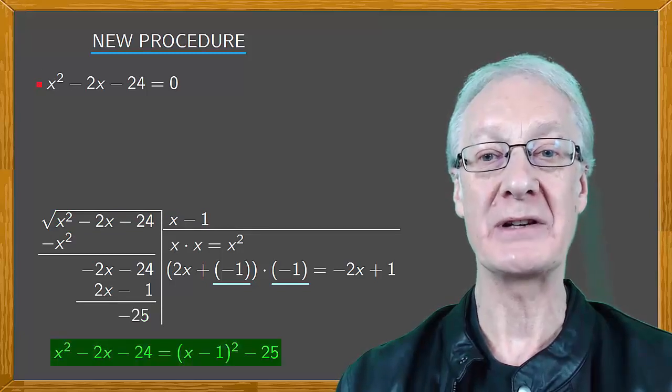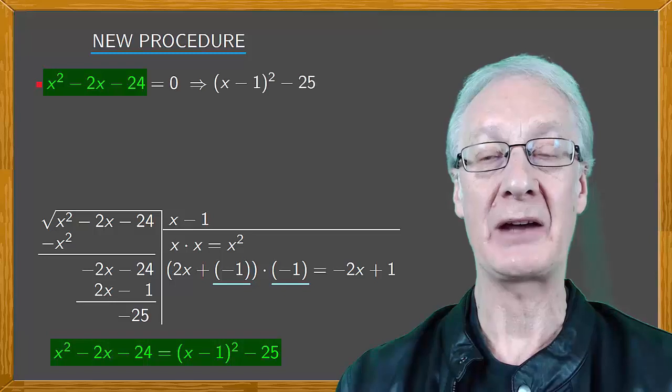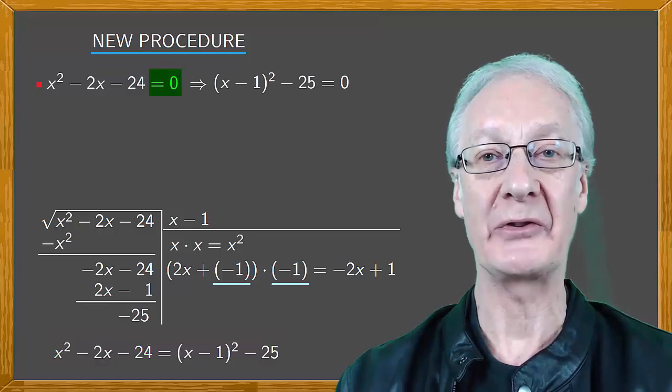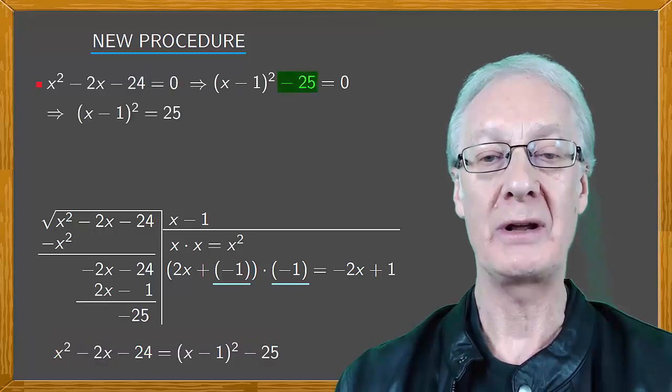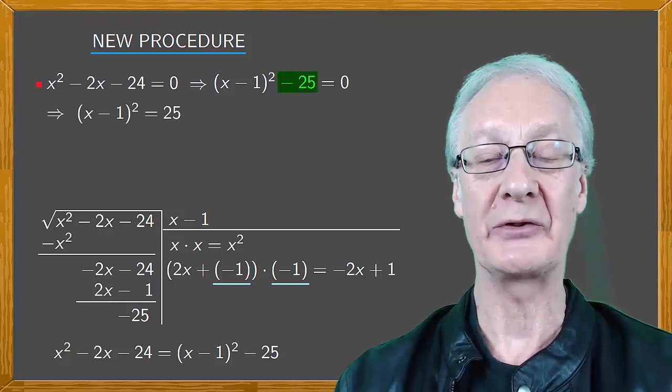Then we substitute this into the equation to give x minus 1 squared minus 25 equals 0, or x minus 1 squared equals 25.